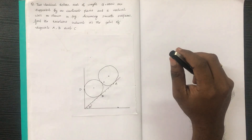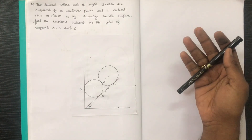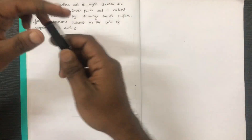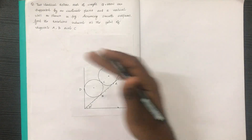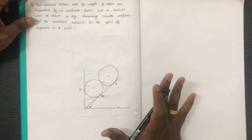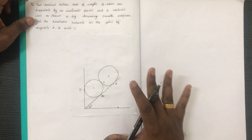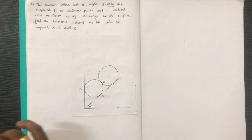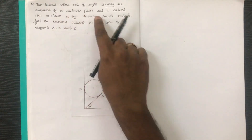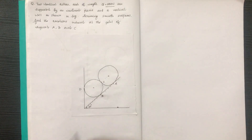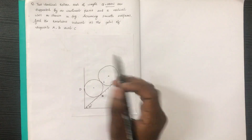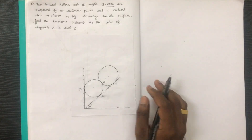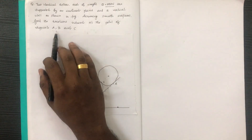Now we have to look at this. Two identical rollers, each of 800 N, are supported by an inclined plane. This inclined plane is at 30 degrees and a vertical wall shown in figure. The identical rollers are supported by an inclined plane assuming smooth surface — no friction. Find the reactions A, B and C.